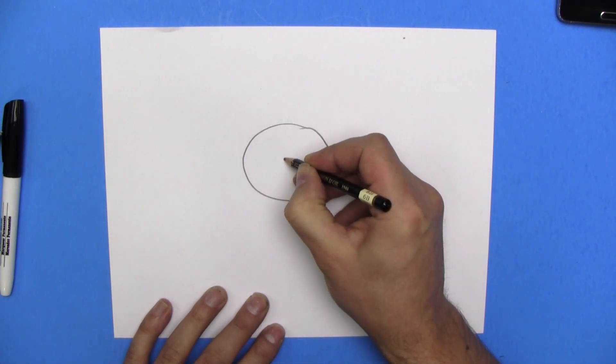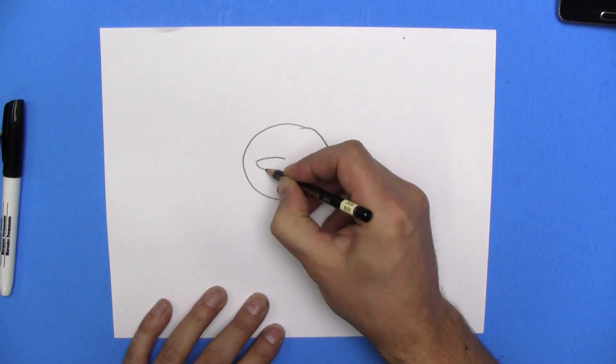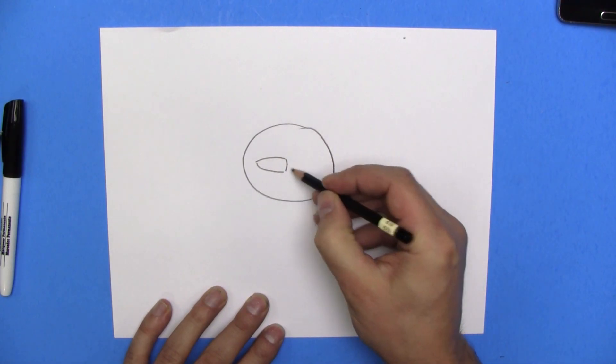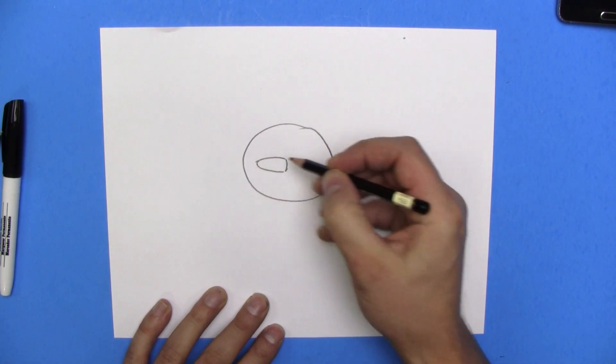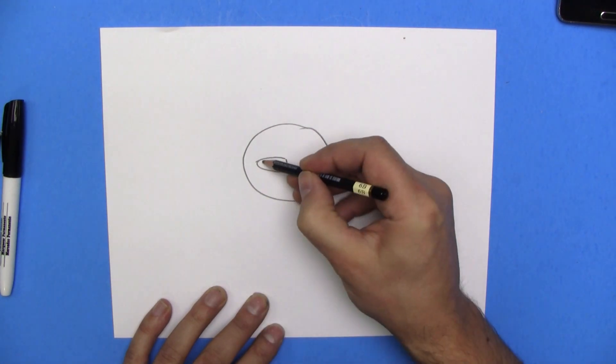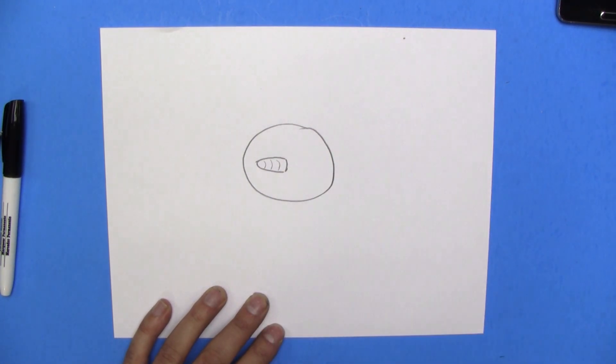Now we need the nose. The nose is going to be pointy, like so. You just start in the middle and draw a pointy line going this way. And then we'll draw some little lines like that. That is his carrot nose, if you did not know.